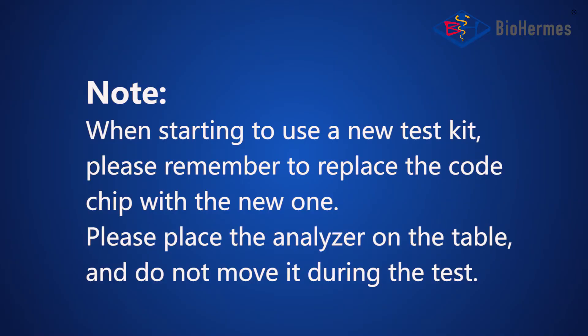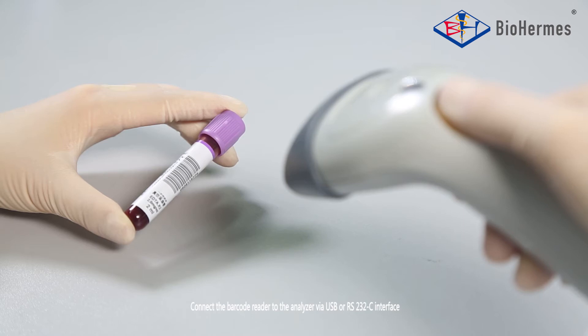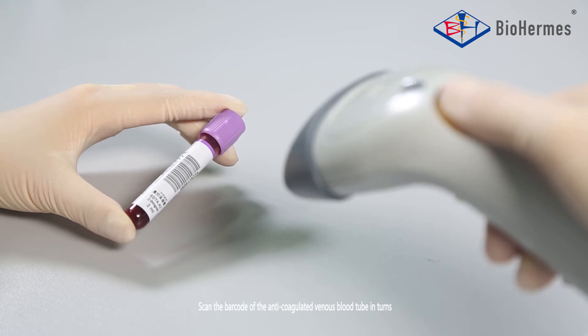Note: When starting to use a new test kit, please remember to replace the code chip with the new one. Please place the analyzer on the table and do not move it during the test. Select ID input. Connect the barcode reader to the analyzer via USB or RS232-C interface. Scan the barcode of the anticoagulated vial.